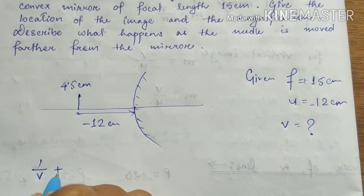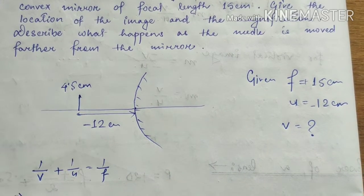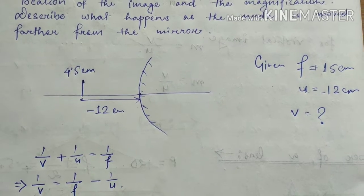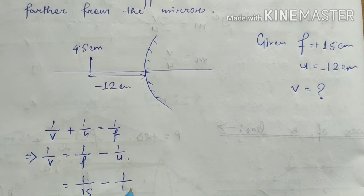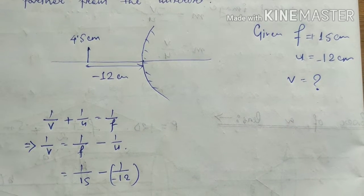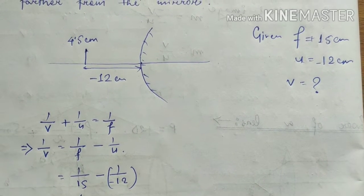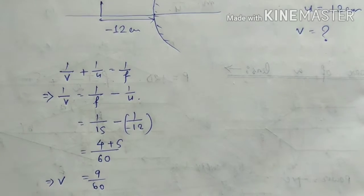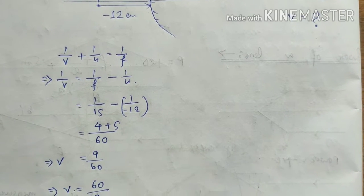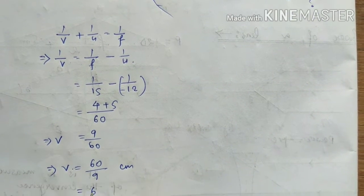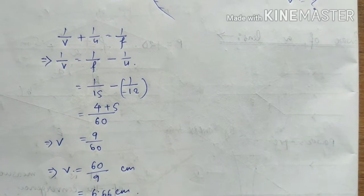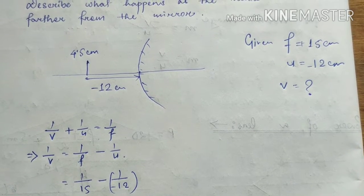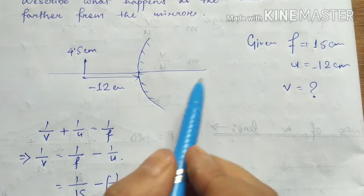Using the mirror equation, 1/V = 1/F minus 1/U, where F equals 15 and U equals minus 12. Taking LCM gives plus 5, so we get 9 by 60. Therefore V equals 60 by 9 cm, which is approximately 6.66 cm. Since this is a convex mirror, a virtual image is formed behind the mirror, giving a positive V value.